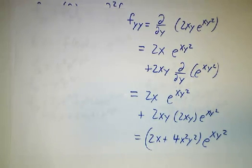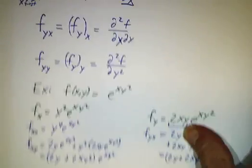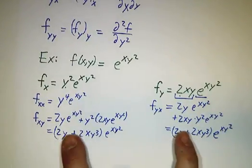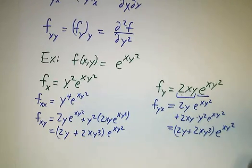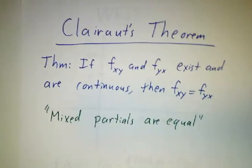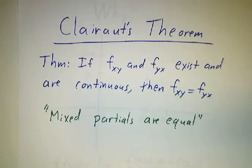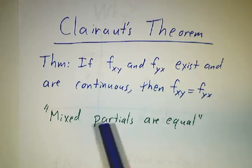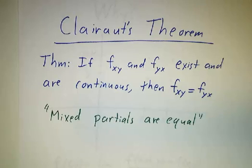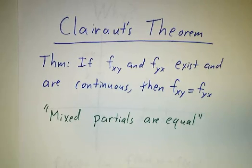So that's the computation of all those partial derivatives. The big deal was the coincidence that f_xy and f_yx wound up being the same — except it's not a coincidence, it's a theorem. It's called Clairaut's theorem. It says that if f_xy and f_yx exist and are continuous — there are some weird counterexamples where they exist but aren't continuous — then f_xy and f_yx are the same function. The slogan for this theorem is: mixed partials are equal.